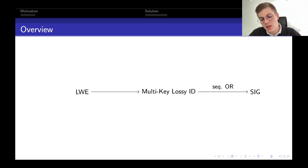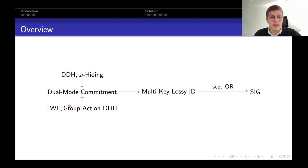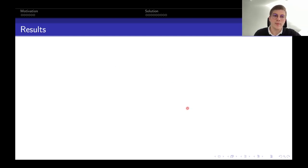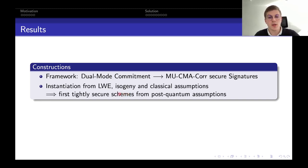Taking a step back, we identified that Regev encryption has a dual-mode property: keys can be generated either for use as an encryption scheme, or differently to serve as a perfectly hiding trapdoor commitment. We abstract this in the notion of a dual-mode commitment scheme and show it can be achieved from LWE, from a group action-based assumption capturing isogenies, and from classical assumptions. This gives our final generic framework from dual-mode commitments to tightly secure signatures in the multi-user setting, instantiable from a variety of assumptions including post-quantum assumptions such as LWE and isogenies, yielding the first tightly secure post-quantum signature scheme in the multi-user setting.